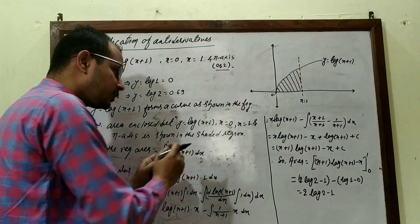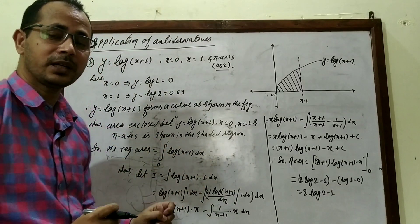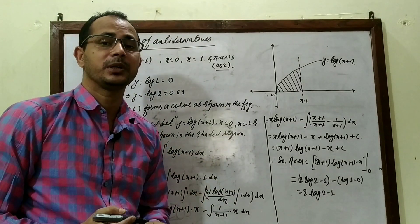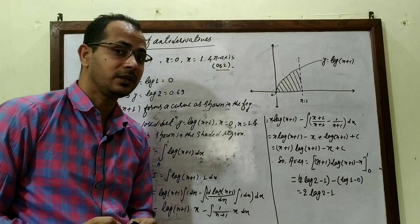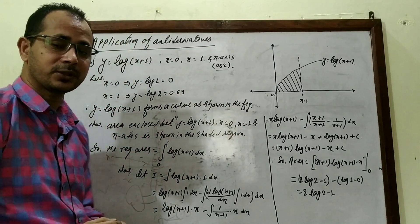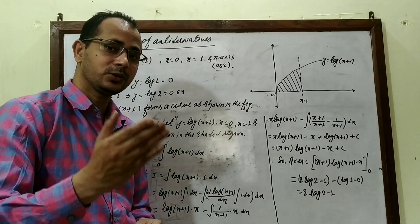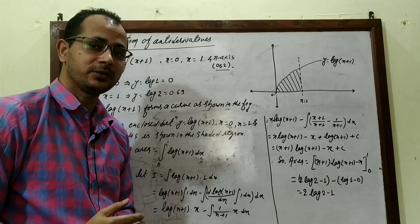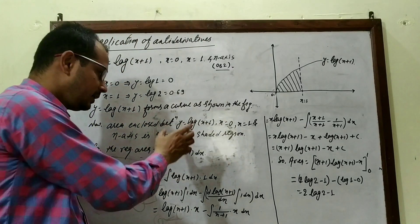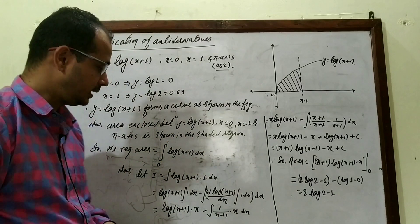We cannot directly integrate log(x + 1), so we use integration by parts. An integration by parts video is uploaded in the playlist — watching that first will make this clear. We split using LATE rule: u = log(x + 1) (logarithmic), v = 1 (algebraic).